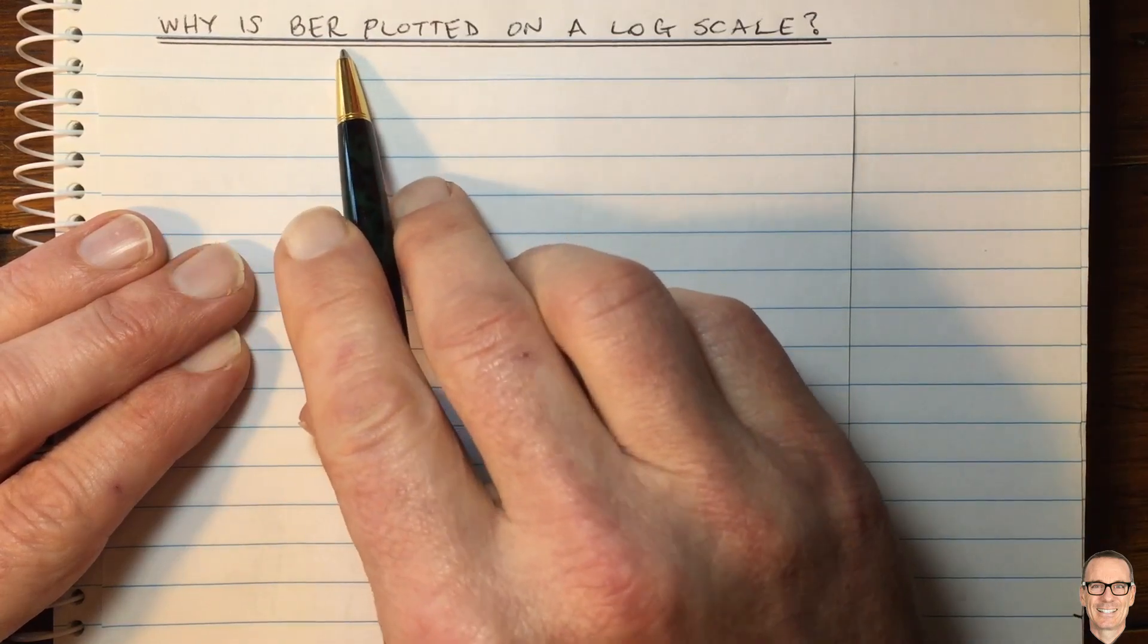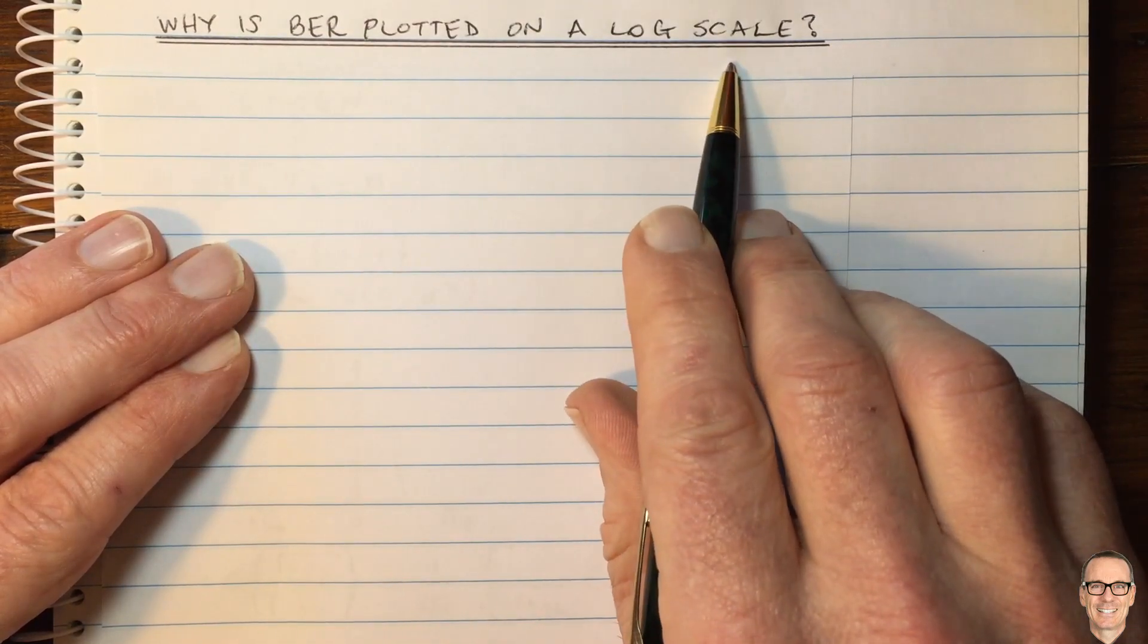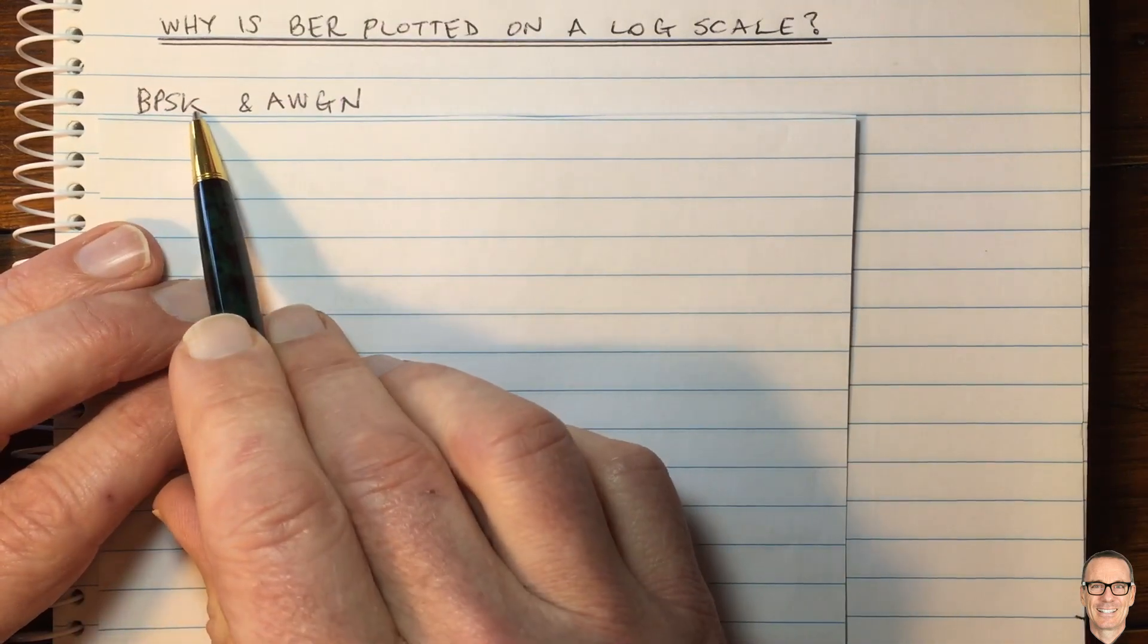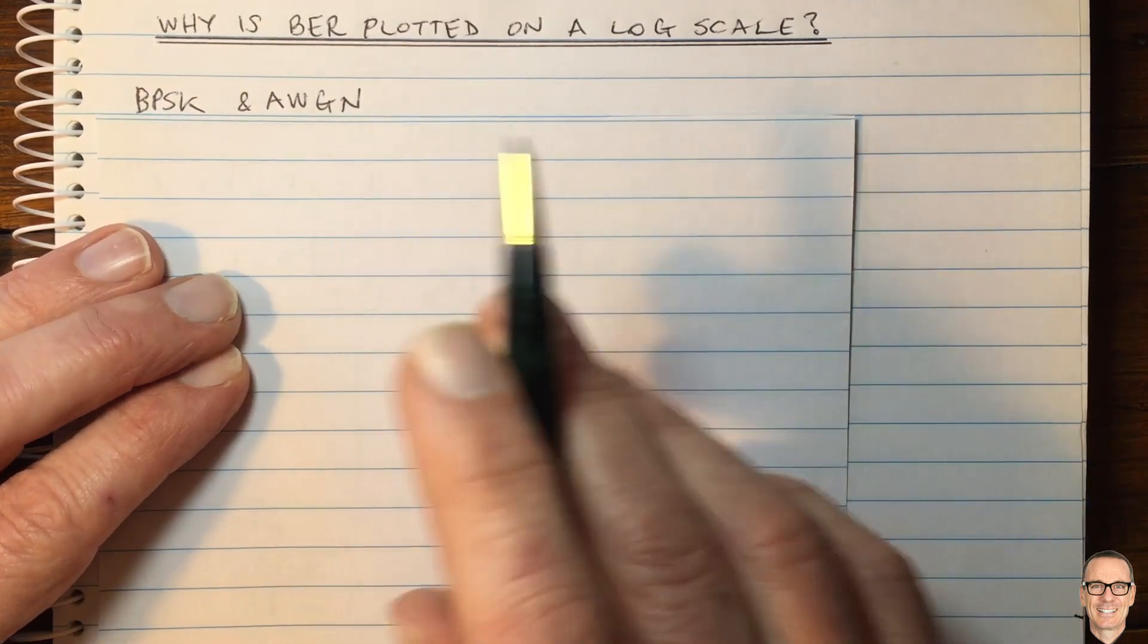Why is bit error rate plotted on a log scale? Let's look at the most basic example of binary phase shift keying with an additive white Gaussian noise channel.